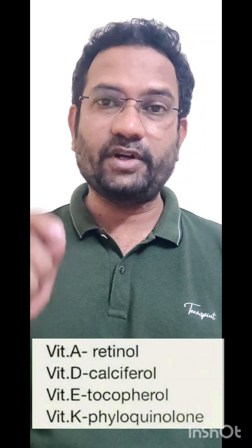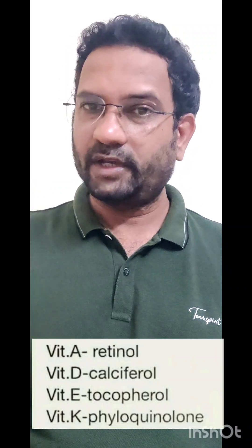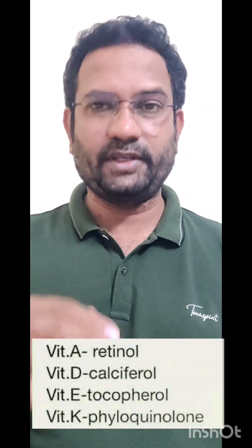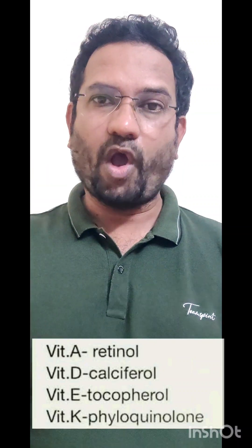Vitamin A is chemically known as retinol. Vitamin D is chemically known as calciferol. Vitamin E is chemically known as tocopherol. Understand these words — retinol, calciferol, tocopherol. Everything is ending with -OL because all of them have an alcoholic functional group. According to IUPAC, an OH group is denoted as -OL.